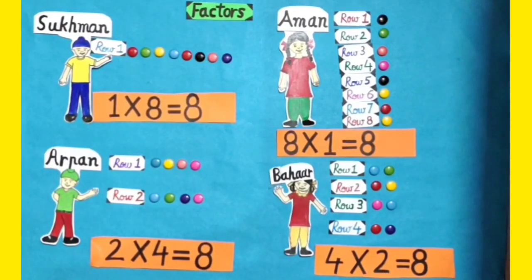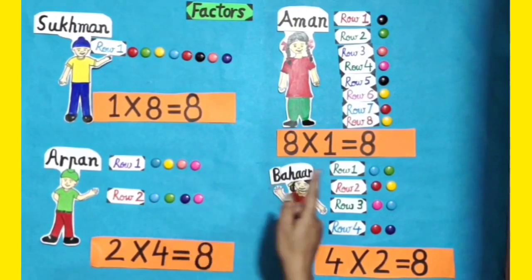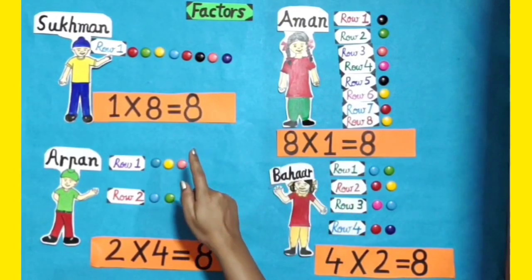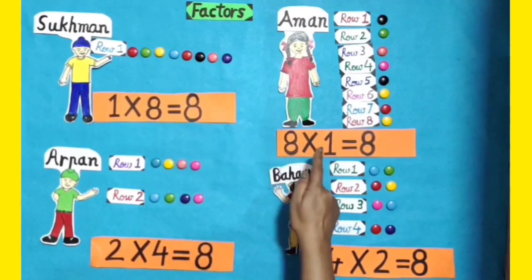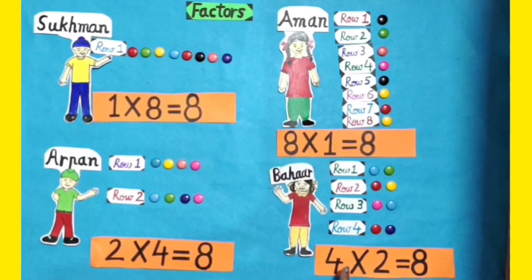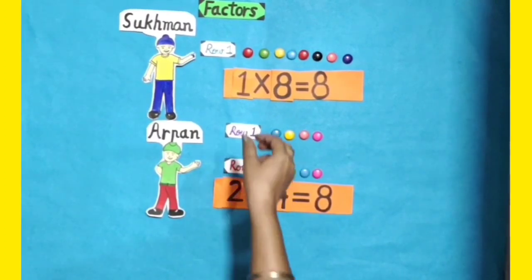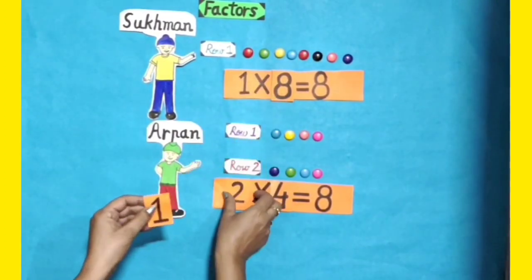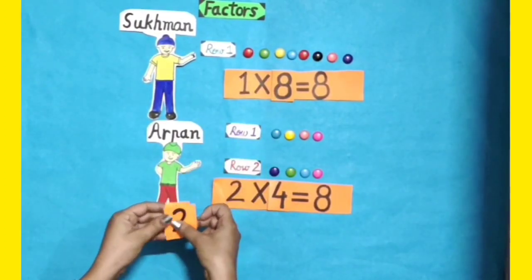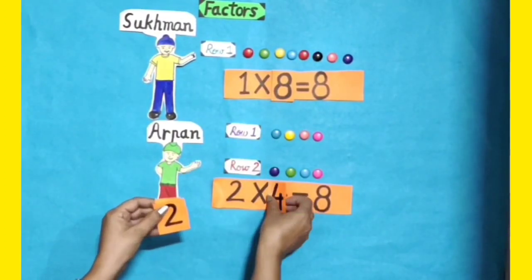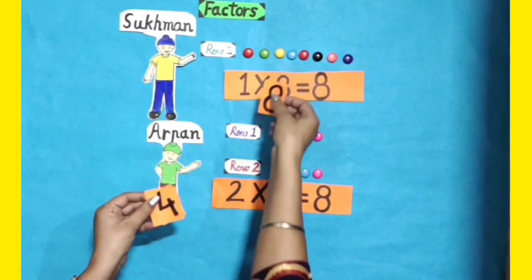We know that by changing the order of digits we get the same answer, so we take 1 out of each pair. Therefore, dear students, the factors of 8 are 1, 2, 4, and 8.